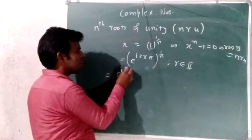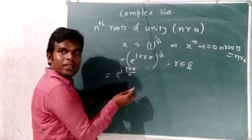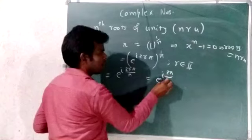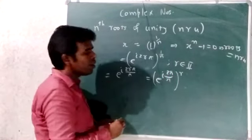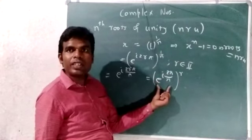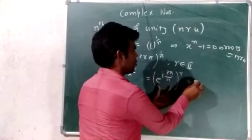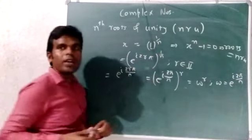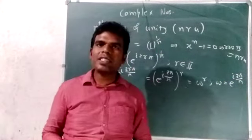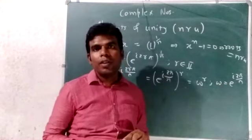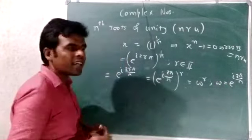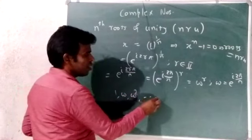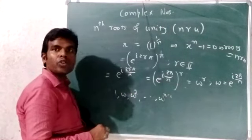We write the general form as e raised to i times 2rπ upon n. We introduce omega — we write omega for this. When r is 0, omega to the 0 equals 1. Then we get omega, omega squared, and so on up to omega raised to n minus 1. These are the distinct values.